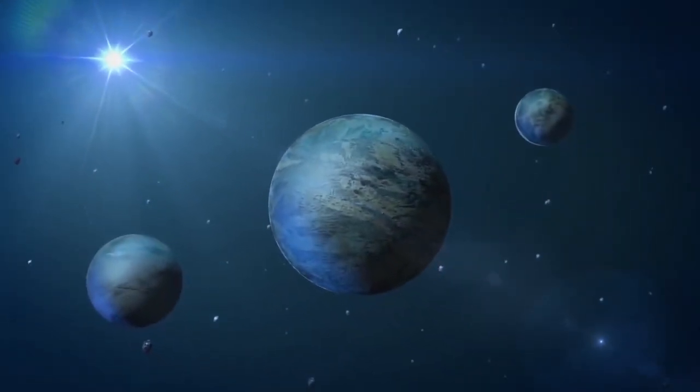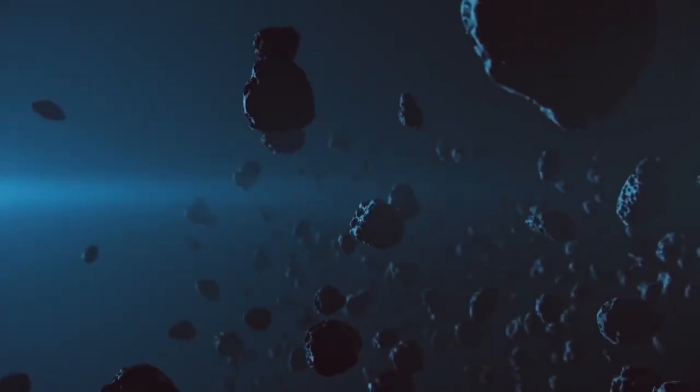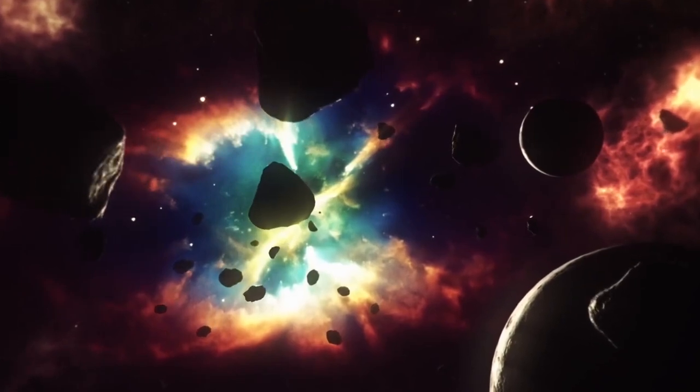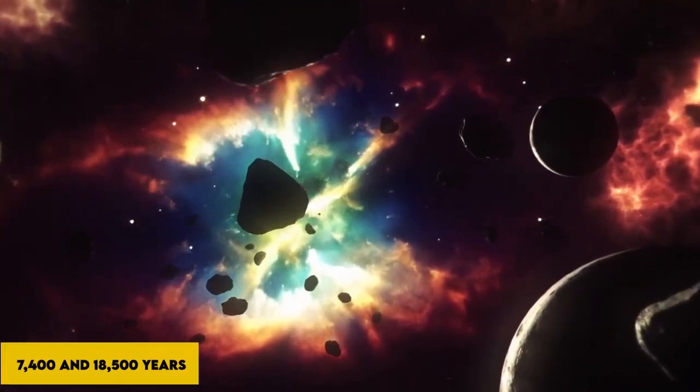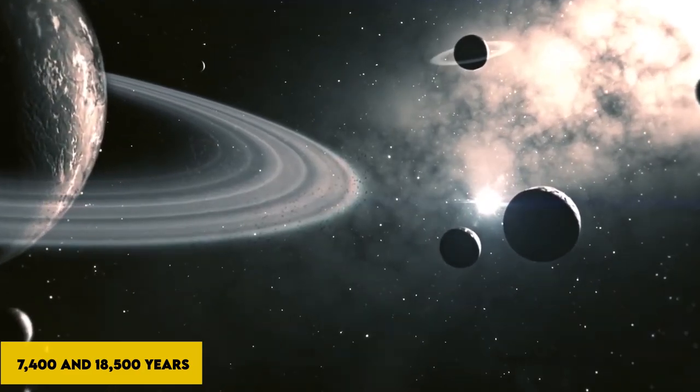Its orbit would be quite elliptical, like many of the planets in the outer solar system. Exactly how much? Therefore, just one spin of the planet around the sun would take between 7,400 and 18,500 years.